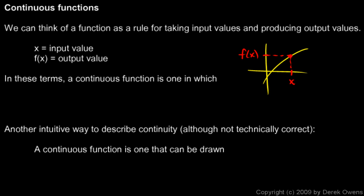If I take the amount I'm changing the x value and make it really, really small, then the amount the y value changes is also getting really, really small, and I can make that change in y as small as I want just by making the change in x sufficiently small. So: a continuous function is one in which small changes in the input result in small changes in the output.